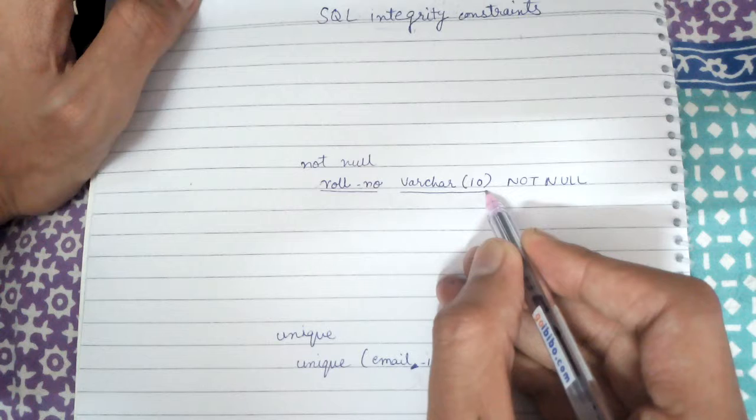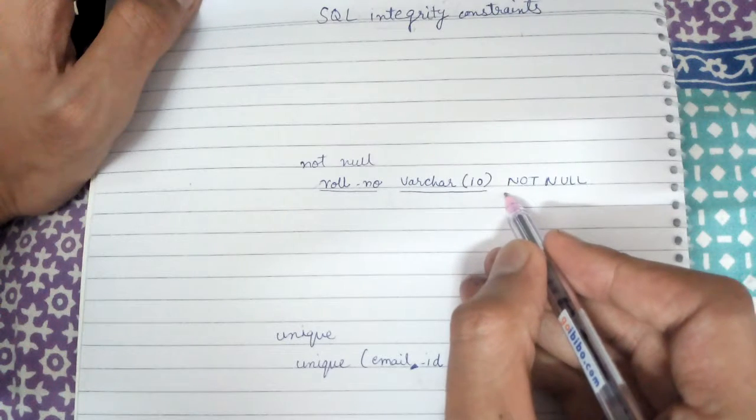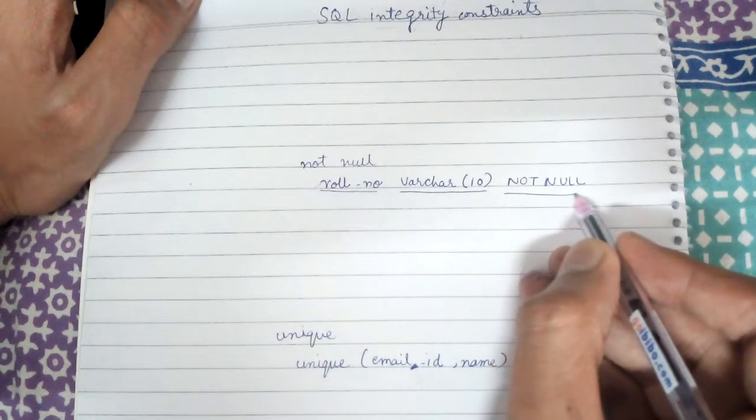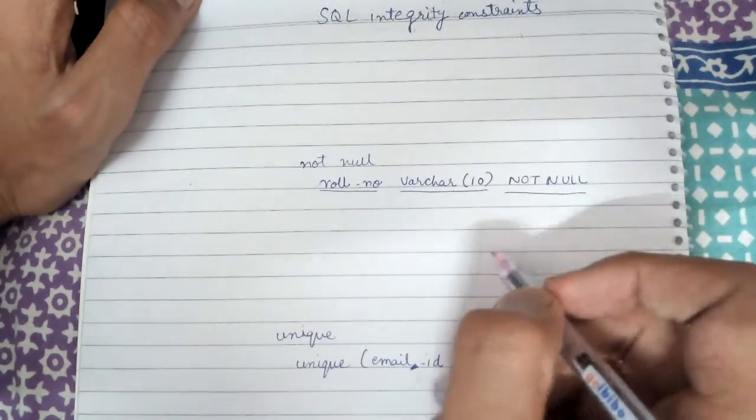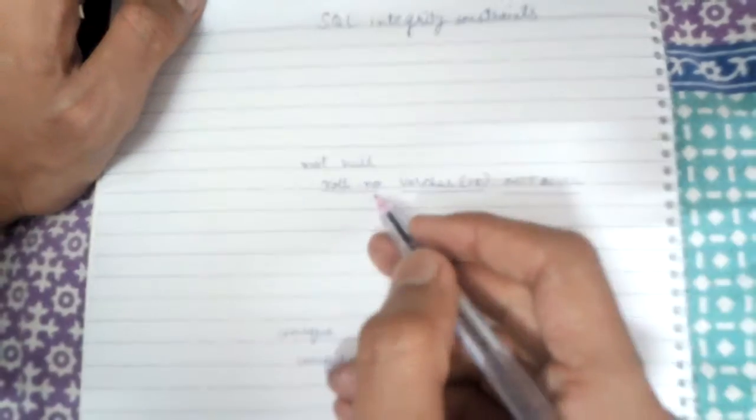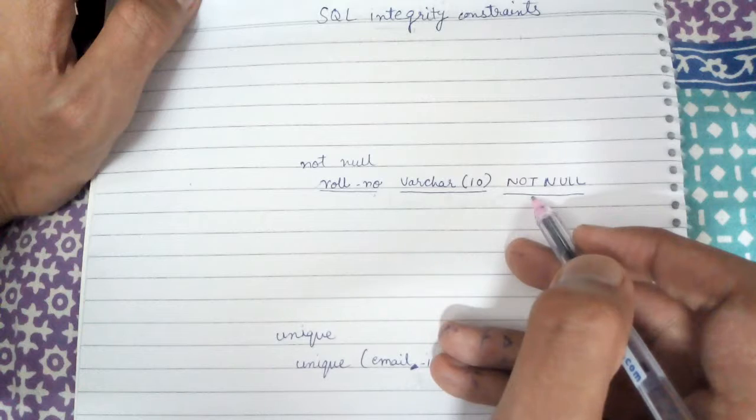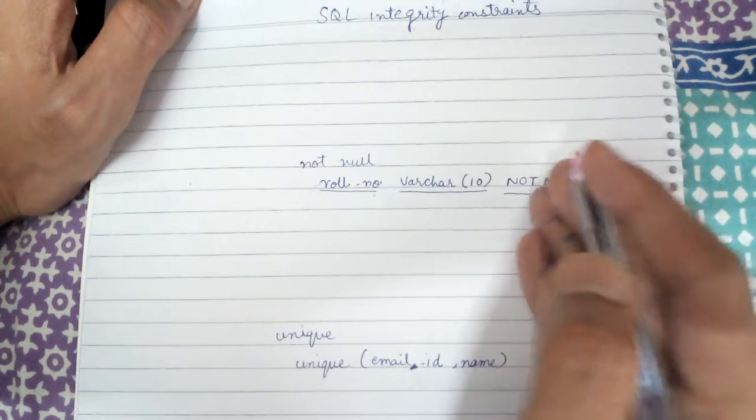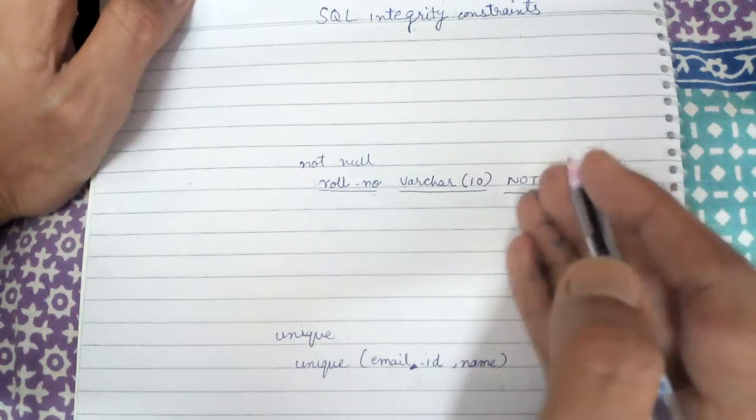Maximum size of it is 10 and the integrity constraint I am applying is not null. So this roll number value cannot be null. There must be some value present in this.